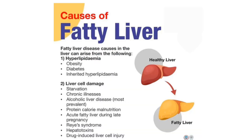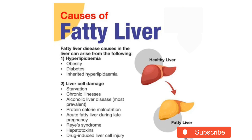Moving to the causes of fatty liver disease, the main cause is the production of too much fat or inefficient metabolism. The fat not properly handled by the body gets stored in the liver cells, causing the liver to bloat. Excessive alcohol is one prominent cause, leading to alcoholic fatty liver disease, also known as AFLD. Other causes include high blood sugar, obesity, insulin resistance, or abnormally high levels of triglycerides or other fats in your body.